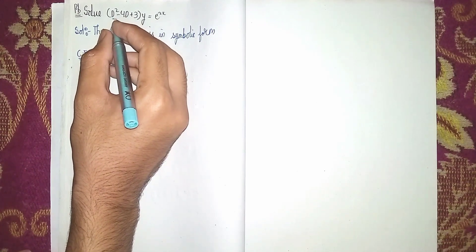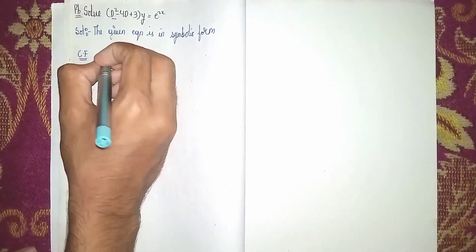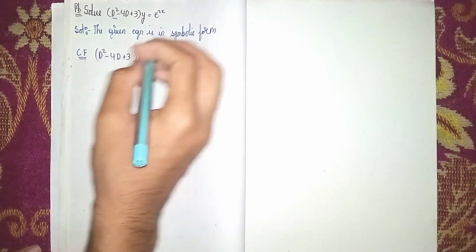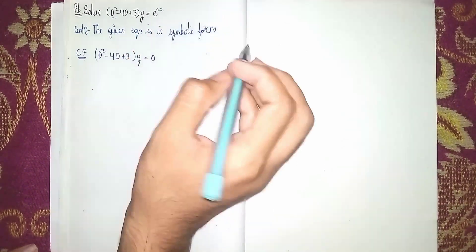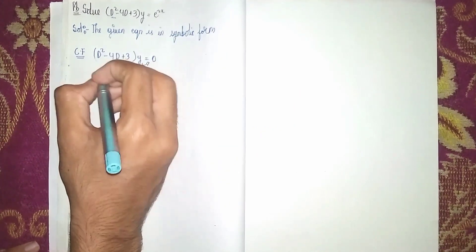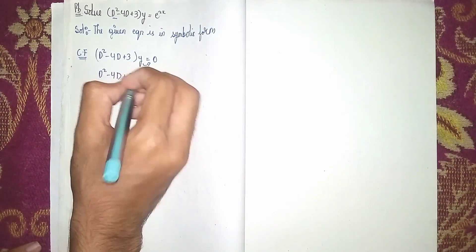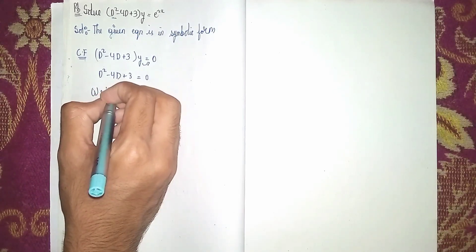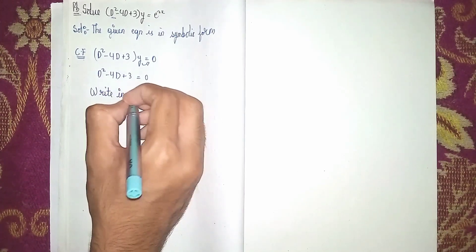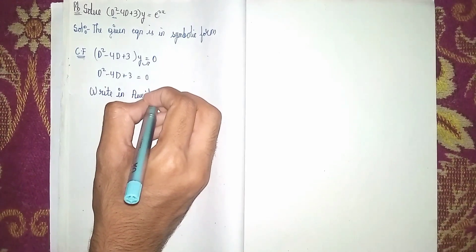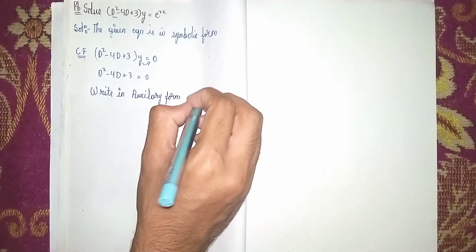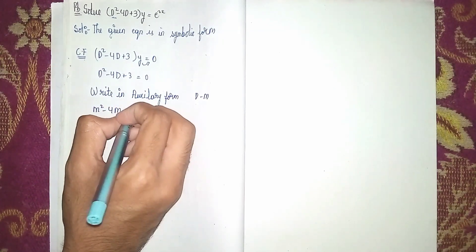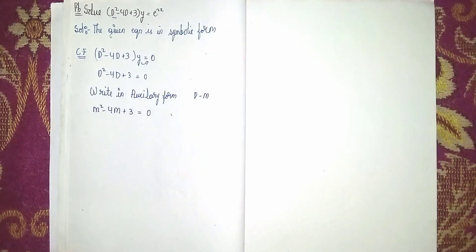For the complementary function, I take the left-hand side: D² - 4D + 3 into y equals zero. To find the complementary function, we set the RHS as zero. Sending y aside, we get D² - 4D + 3 = 0. Writing this in auxiliary form, instead of D I write m, so it becomes m² - 4m + 3 = 0.